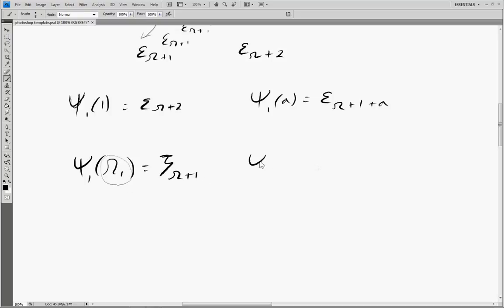And we can say in general that psi 1 of omega 1 times a is equal to zeta omega plus 1 plus a.